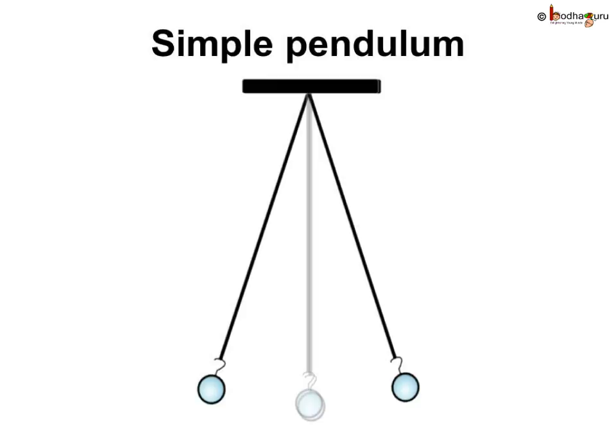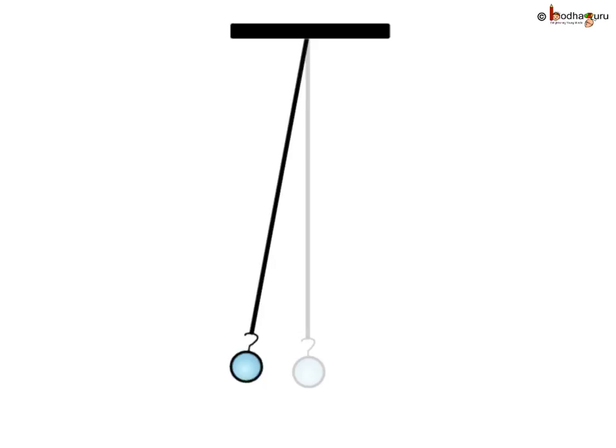A simple pendulum does oscillations, that is to and fro motion at a fixed interval. This periodic motion of pendulum is called oscillatory motion.